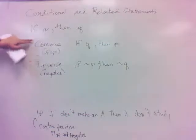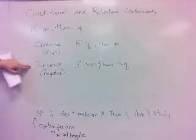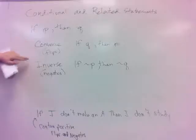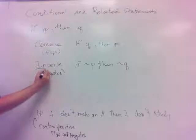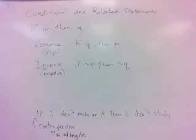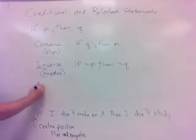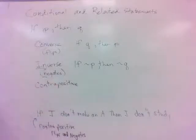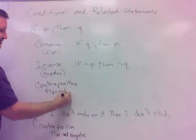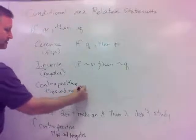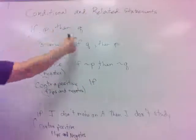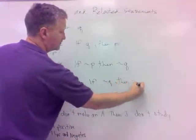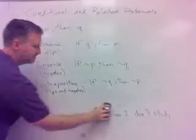Just a quick word on keeping these straight, because in the past students have had difficulty remembering which one is the inverse. It's inverse and negates — N and N. Kind of remember that: inverse negates, N and N. Converse flips. Then the contrapositive — it's pretty easy to remember because what do you do? You do both. It's the longest word; it does both things, it flips and negates. So with this statement, it's if not Q, then not P. That's our summary of those things.